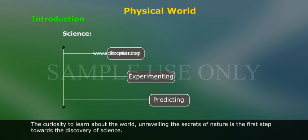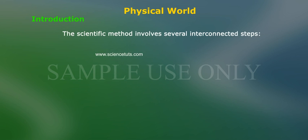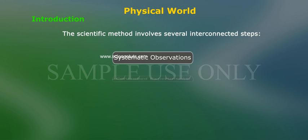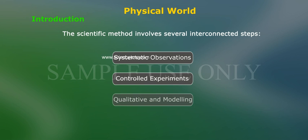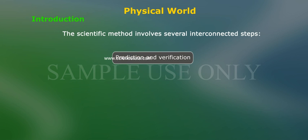is the first step towards the discovery of science. The scientific method involves several interconnected steps: systematic observations, controlled experiments, qualitative and modeling, prediction and verification or falsification of theories.